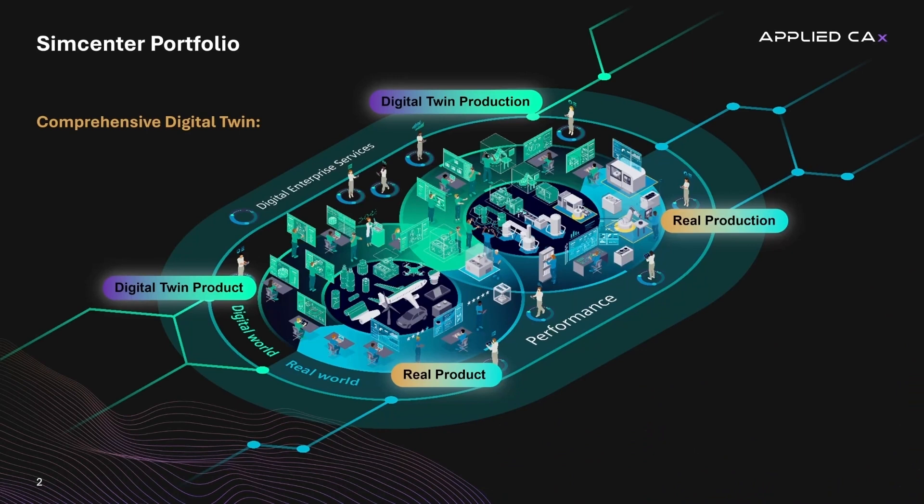Siemens Digital Industry Software is focused on helping companies accelerate their digital transformation. A comprehensive digital twin is a key enabler for this. It must be comprehensive in that it covers the entire product and production lifecycle, and it must include a closed loop to ensure actual performance data is fed back into models that are continuously refined.